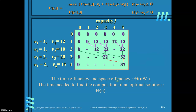The time complexity is still Θ(nW), meaning the number of computations is at most n times W. The memory required is also n times W. However, to find the composition — that is, which items are included in the sack — you need n additional computations. Therefore, the time needed to find the composition of an optimal solution is Θ(n).